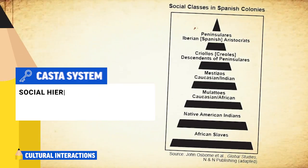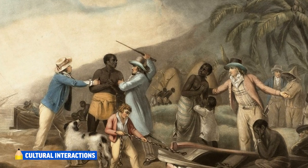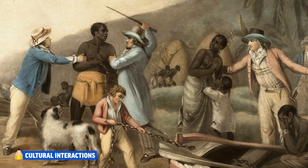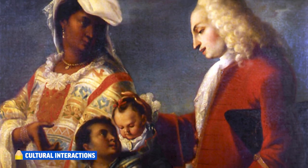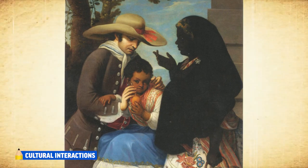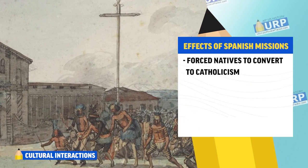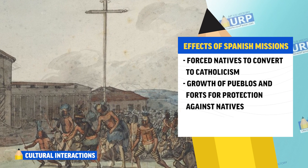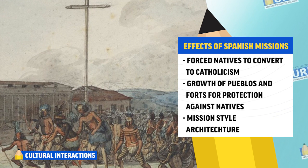Since the Spanish mostly sent male conquistadors, they often intermarried with Native women, leading to the development of the Casta System — a racial hierarchy with complex social relationships. Peninsulares sat atop the hierarchy, while enslaved Africans were forced to labor under the brutal Asiento System, or Natives were forced to work on encomiendas. Mestizo culture emerged from Spaniards marrying Natives, and Mulatto culture emerged from relations between conquistadors and Africans. The Spanish also established religious communities called missions, whose effects included forced conversion to Catholicism, growth of towns called pueblos, forts for protection from Native resistance, and distinctive mission-style architecture using natural materials and tall adobe walls.